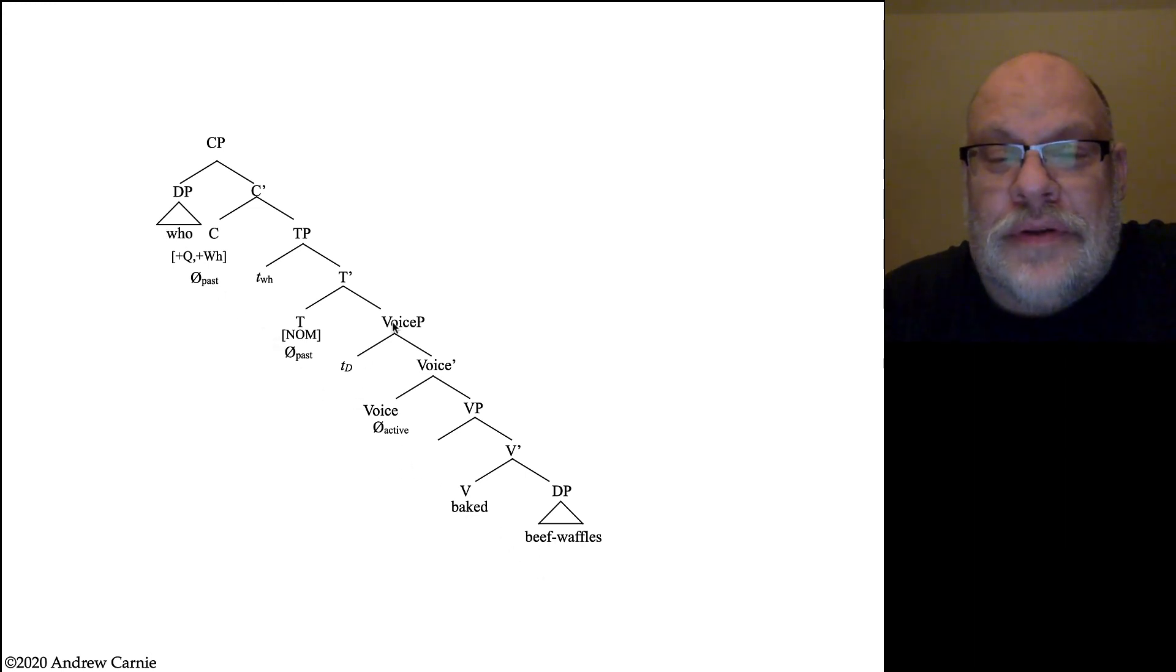So our surface order is who baked beef waffles, which is exactly the same as what it was at the deep structure. But we have all these extra movements that have gone on. In fact, the sentence is who past trace trace trace null voice baked beef waffles. That might disturb you a little bit, but the surface order is in fact maintained even though you have all these null items. And this is a well-formed deep structure because all the features are checked and all the constraints are met.